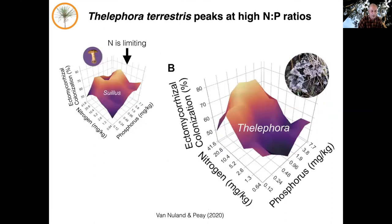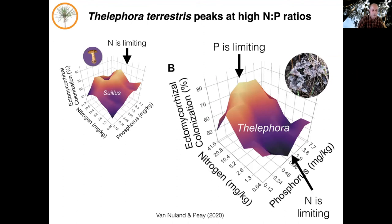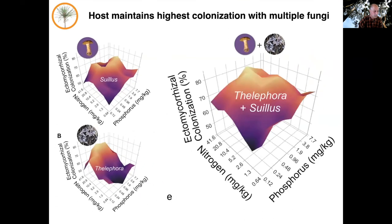Moving to Thelephora, things get even more interesting — you can see the exact opposite pattern. Its peak is where nitrogen is abundant: highest nitrogen levels with phosphorus at its lowest. So it peaks when there's lots of nitrogen and not much phosphorus, and has its lowest colonization levels when there's a lot of phosphorus. When you put both fungi together, what you actually get is maximal colonization across the entire surface, which suggests that having multiple partners allows the plant some environmental flexibility.